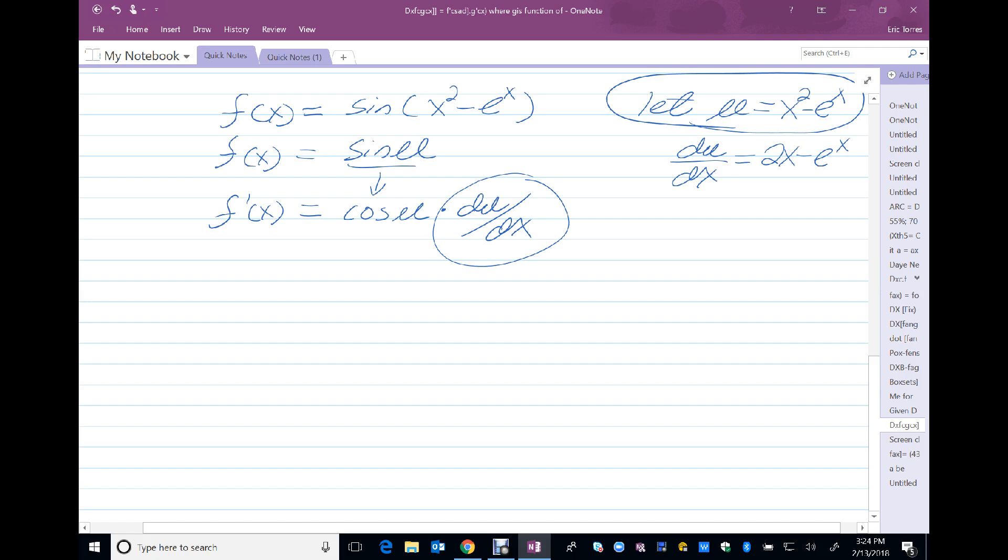And now I just plug everything back in and clean up the algebra if possible. So, cosine of u, where u is x squared minus e to the x, times du dx, which is 2x minus e to the x.